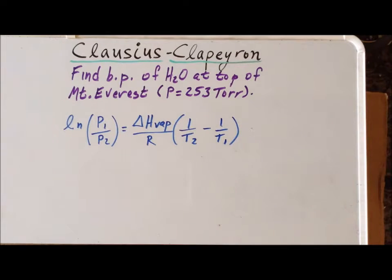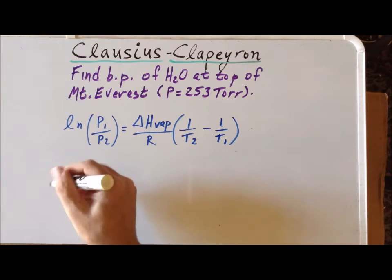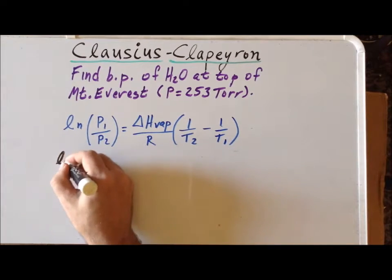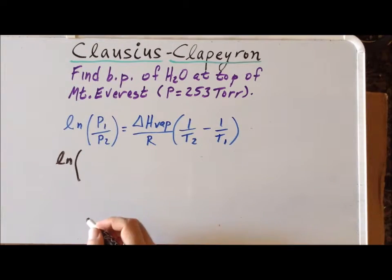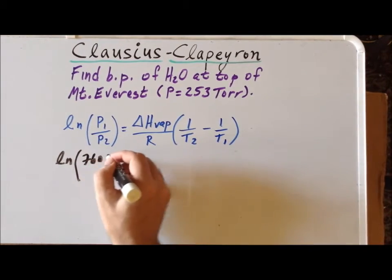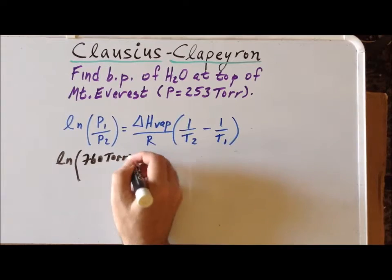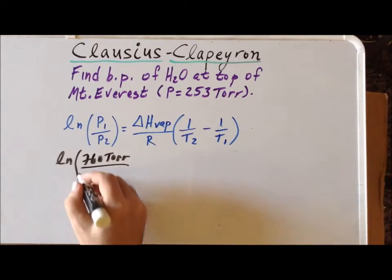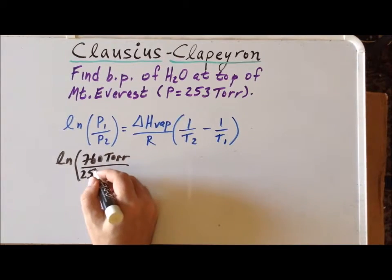Now we can begin to substitute into the Clausius-Clapeyron equation the specific values for our problem. So recall that P₁ is 760 torr and P₂, Mount Everest, is 253 torr.